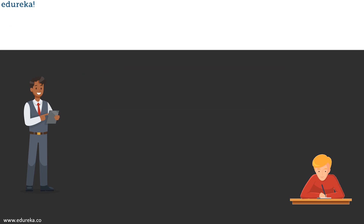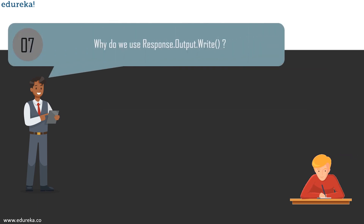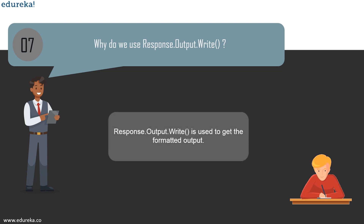Question 7: why do we use Response.Output.Write? We use Response.Output.Write to get formatted output. Formatted output converts the internal binary representation of data to ASCII characters written to the output file, while formatted input reads characters from the input file and converts them into internal form. This is a very basic question commonly encountered in interviews.